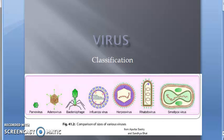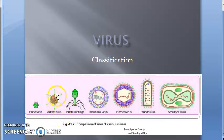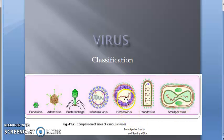Last video we started off with the viral classification of viruses. We saw that parvovirus is a DNA virus, adenovirus is a DNA virus, bacteriophage is a DNA virus, smallpox is a DNA virus, and herpes is a DNA virus.